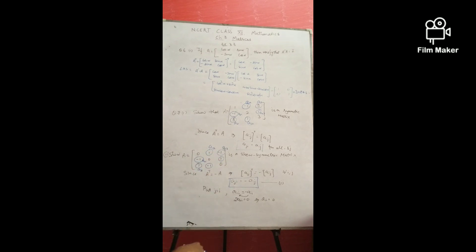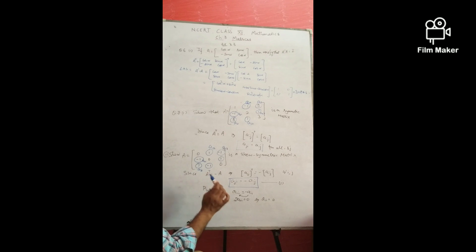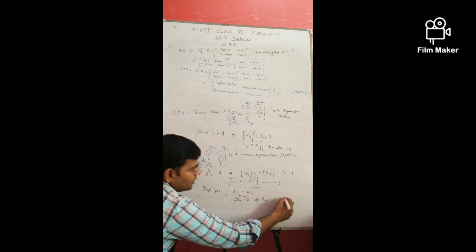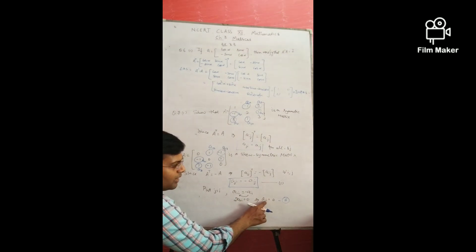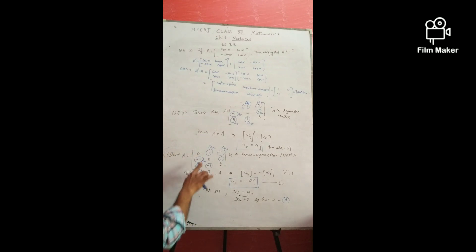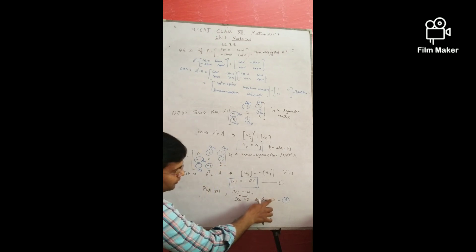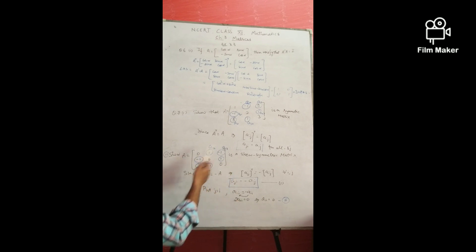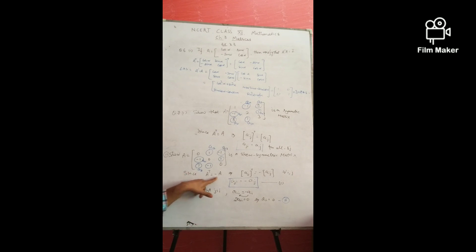For diagonal elements of a skew-symmetric matrix: putting j = i in a_ji = −a_ij gives a_ii = −a_ii, so 2·a_ii = 0, implying a_ii = 0. All diagonal elements must be zero. You can see that a_11 = 0, a_22 = 0, a_33 = 0 in the example. Though you can simply take the transpose and check A' = −A, understanding these properties is valuable.